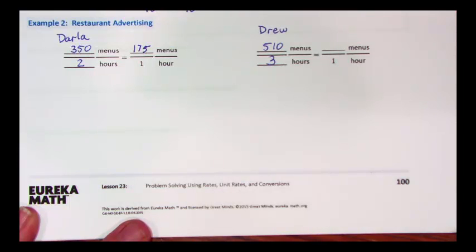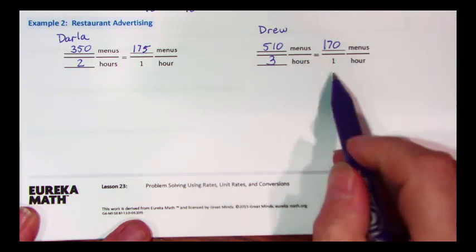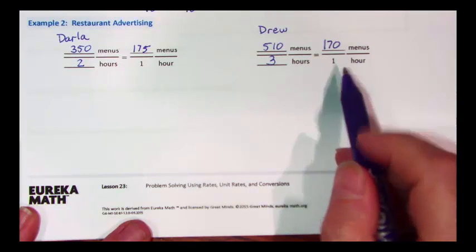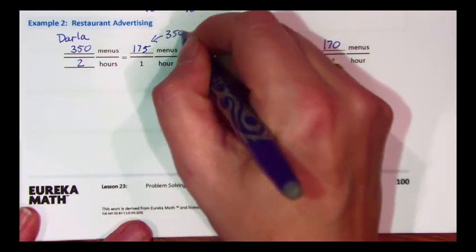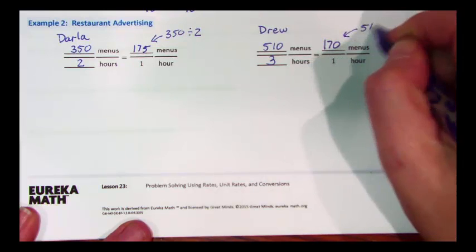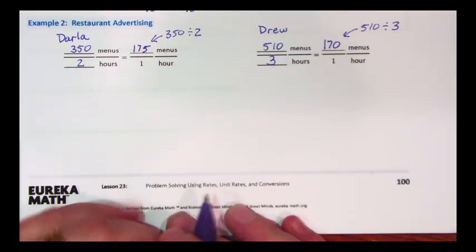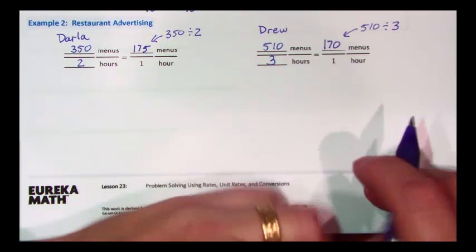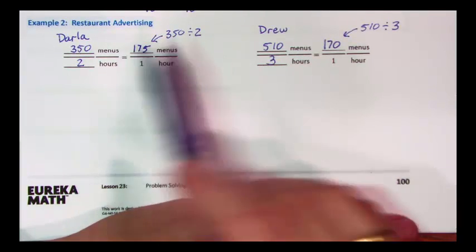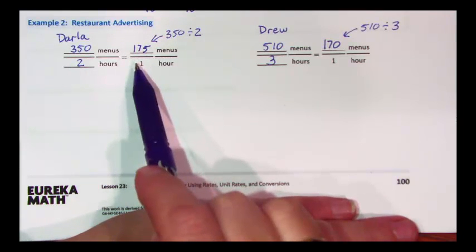If I take a look at Drew's rate, and divide 510 by three, I get 170 menus in one hour. This number was 350 divided by two, and this number was 510 divided by three. Now we can compare. Who gets the ten-dollar bonus? You can see very clearly that Darla was faster. She did more menus than Drew.